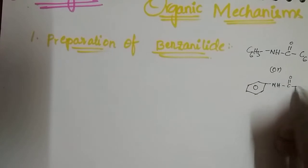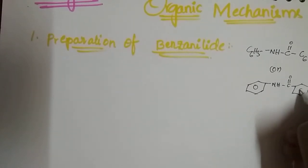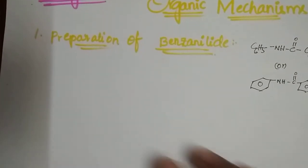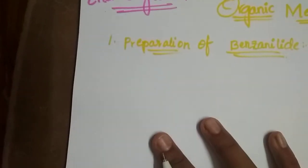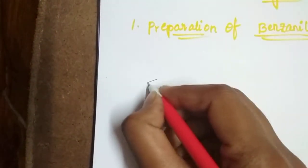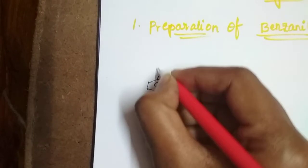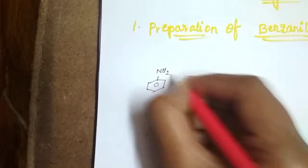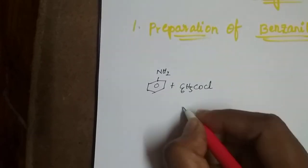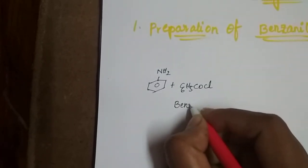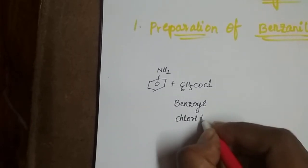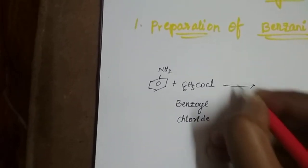Now the preparation of Benzionylite: when we react aniline with C6H5-CO-Cl, which is benzoyl chloride, in the presence of basic medium...